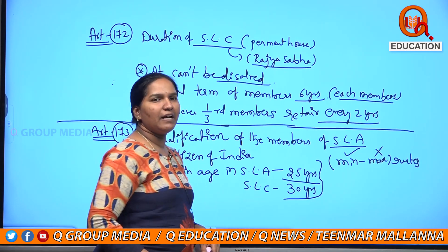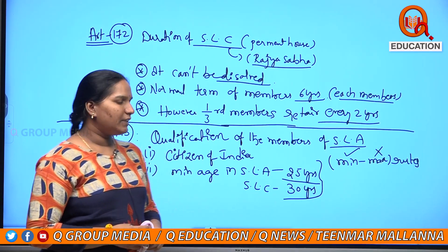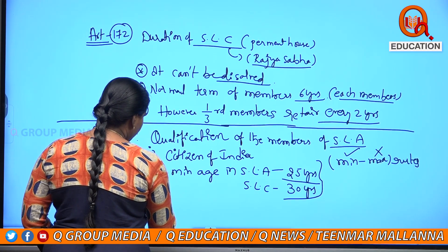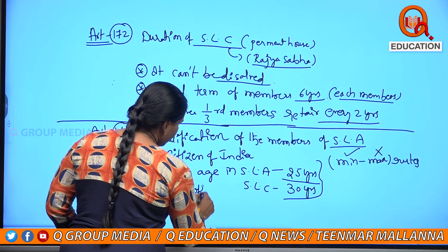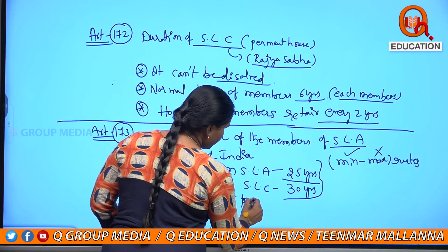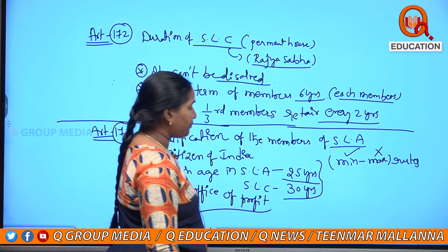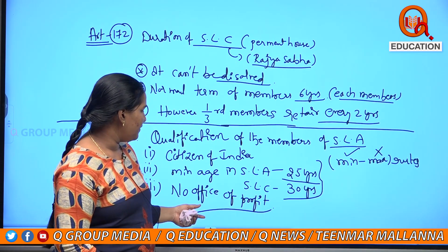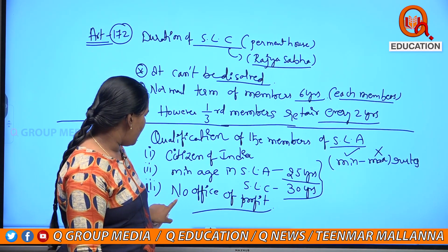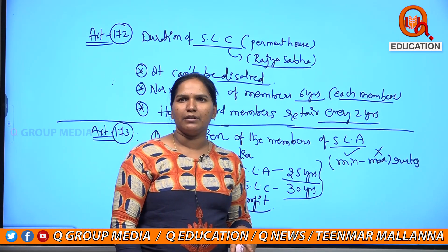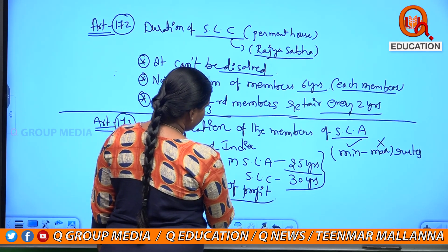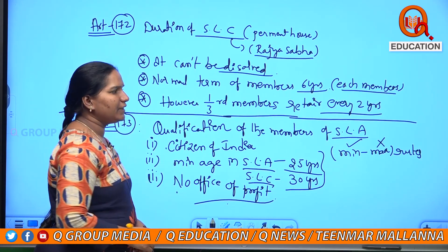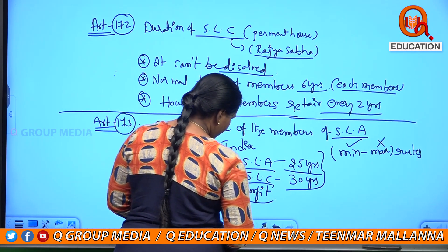Minimum age of Legislative Assembly is 25 years; council is 30 years. The third point is no office of profit. These are the qualifications: citizenship, minimum age for legislative assembly and council, and no office of profit.